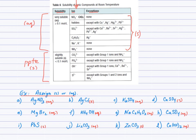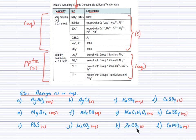Lithium carbonate: finding carbonate in the bottom half of the table, carbonates usually form precipitates. Checking exceptions: except with group 1 ions and ammonium. Lithium is a group 1 ion, so it's the exception — since the rule is solid, the exception is aqueous. Zinc carbonate: carbonates are usually precipitates, zinc is not an exception, so zinc carbonate is solid.